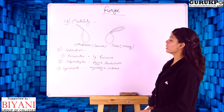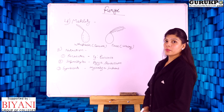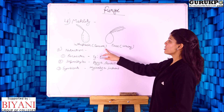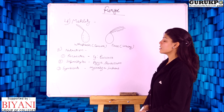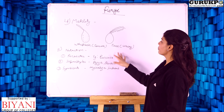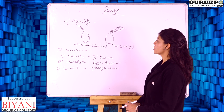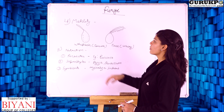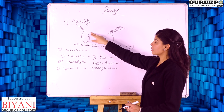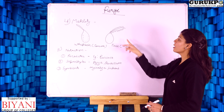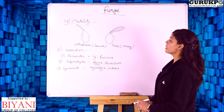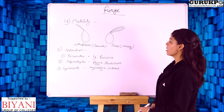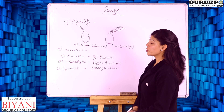For motility in fungi, flagella are present, and there are two kinds of flagella. The first is the whiplash type and the second is the tinsel type. The major difference is that in whiplash flagella the surface is smooth, as seen in the diagram, whereas in tinsel flagella the surface is hairy — hairs are present on the surface.